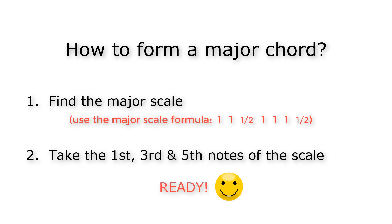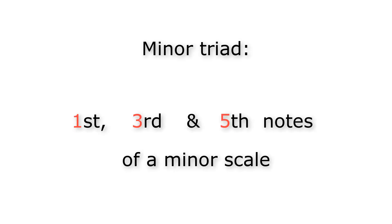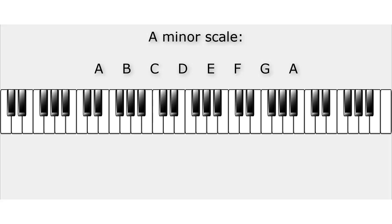It's time to have a look at minor chords. Minor triads are formed in exactly the same way as major triads — we only take the minor scale instead of the major scale. So a minor triad consists of the first, third and fifth notes of a minor scale. The A natural minor scale is the easiest minor scale, so let's start with the A minor triad. The first, third and fifth notes of the A natural minor scale are A, C and E.